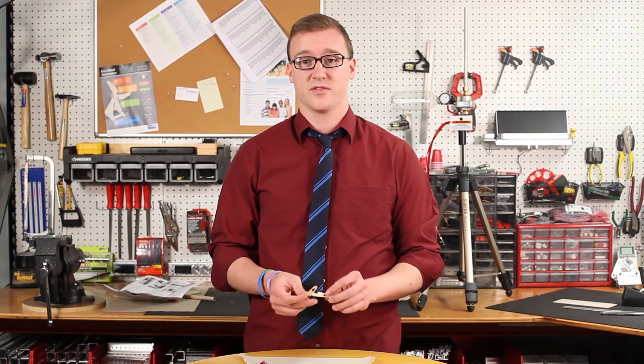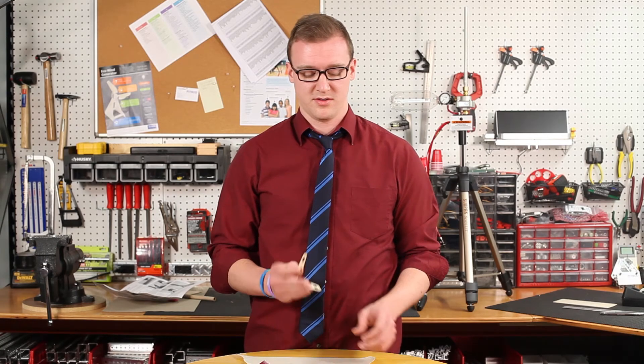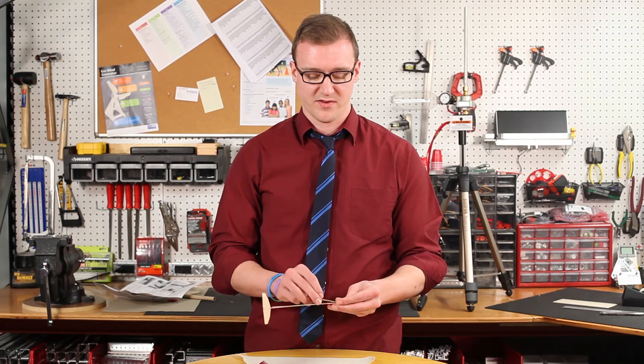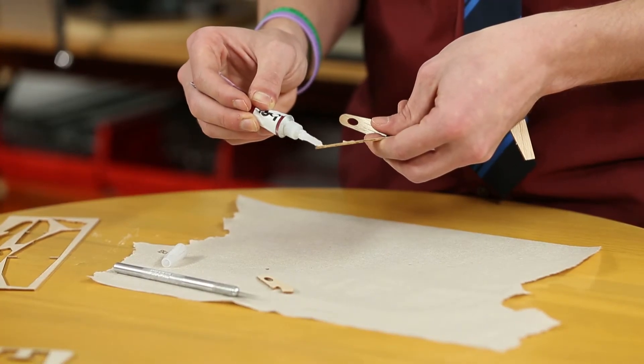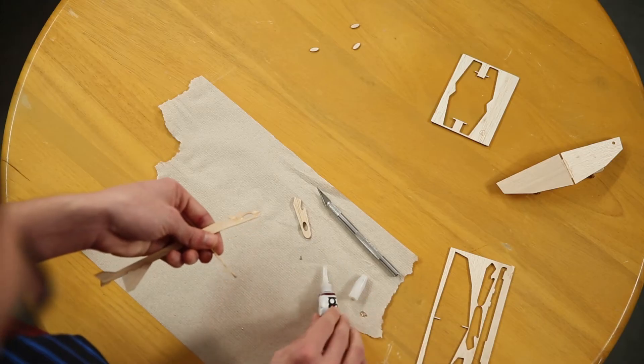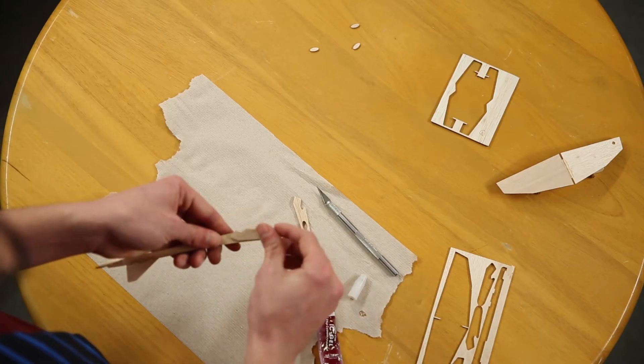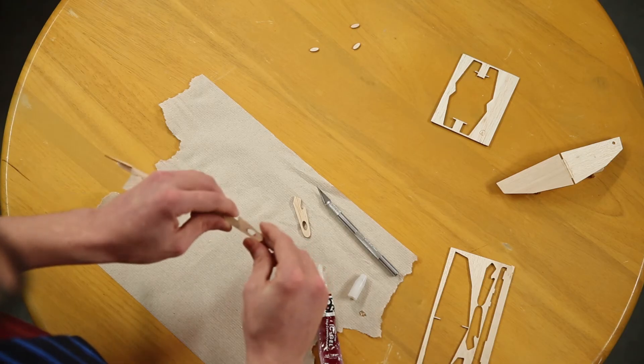Next, take the two pieces for the fuselage's nose and glue them to both sides of the front of the fuselage. So just put glue on each side of the fuselage and then press the parts together, making sure to line up the holes on both pieces.